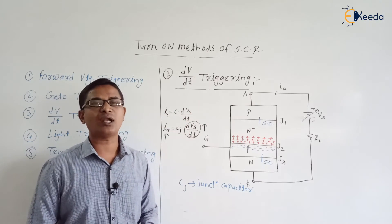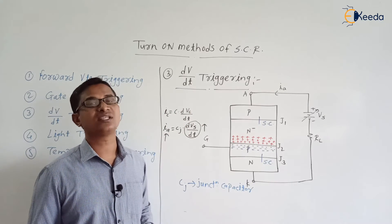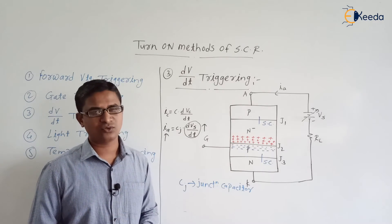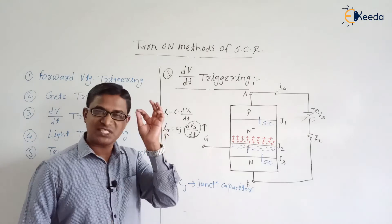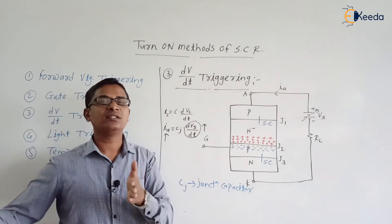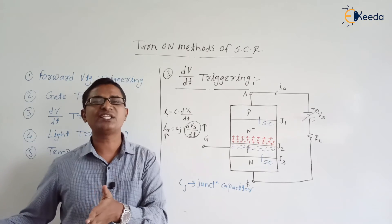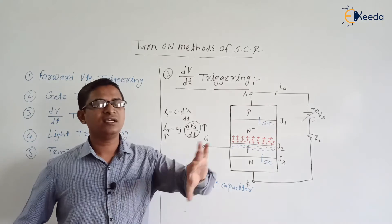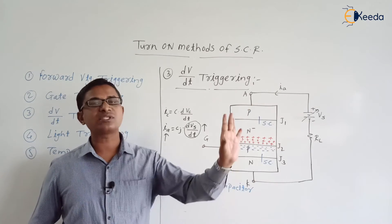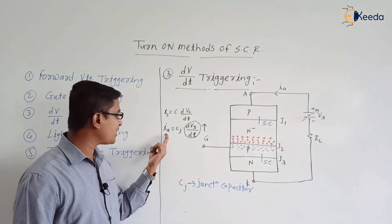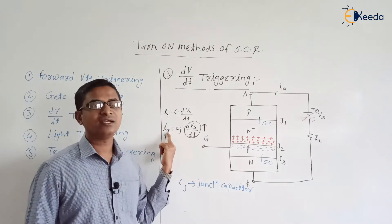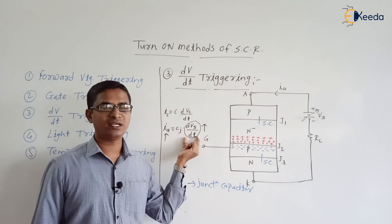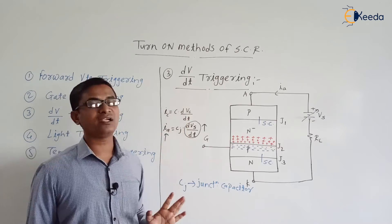Ia increases — Ia being more means our SCR is acting as a short circuit, or SCR has turned on like a switch. Because SCR in the off state means current is leakage current or very small. SCR in the on state means the current value is high. So ultimately our task is to increase the current value, and for that we are using a high dVs/dt. This is nothing but the dV/dt triggering.